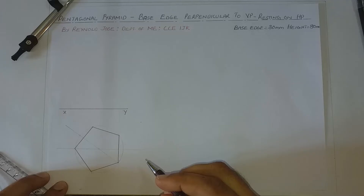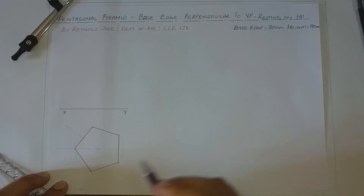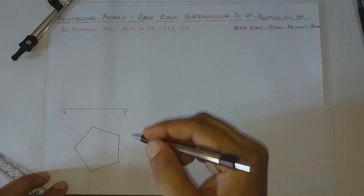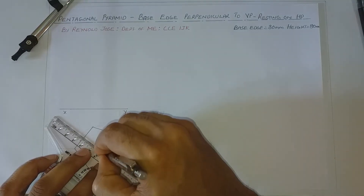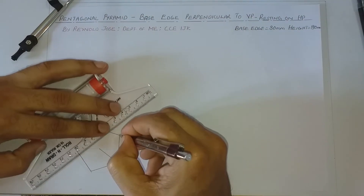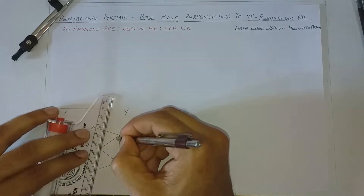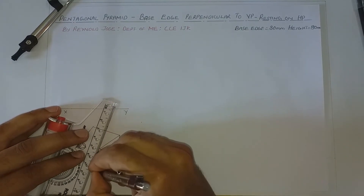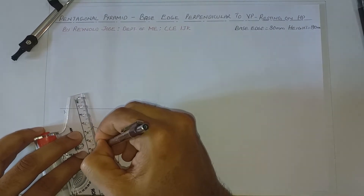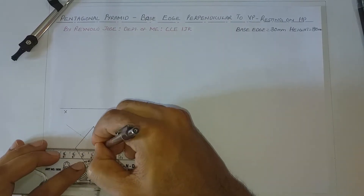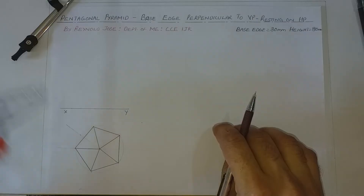Now in order to make it the top view of a pentagonal pyramid, we need to draw slanting edges. This is the center of the corresponding pentagon. From this center, we have to draw slanting edges to each of the corners of the base. We have five base corners for this pentagonal pyramid.